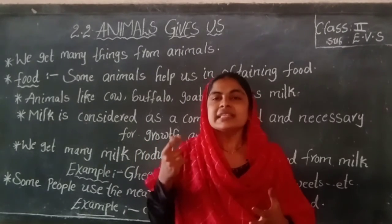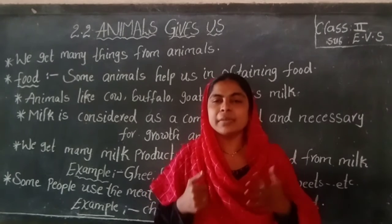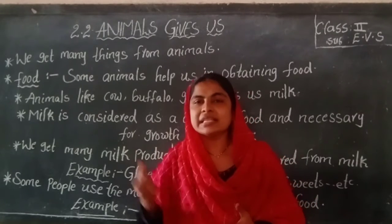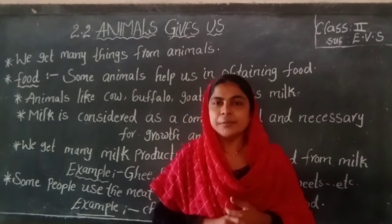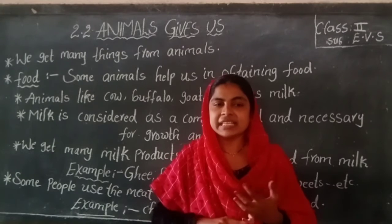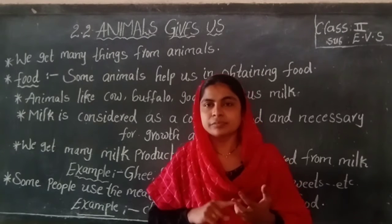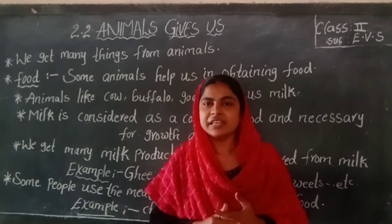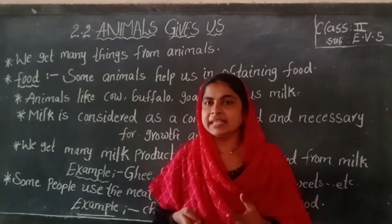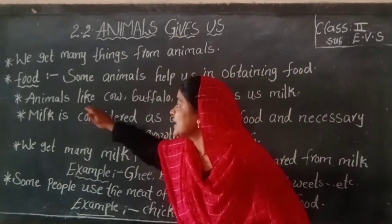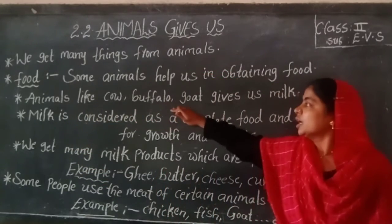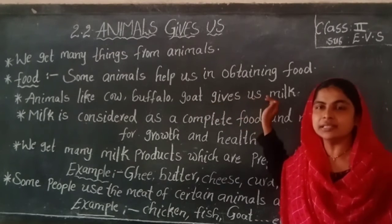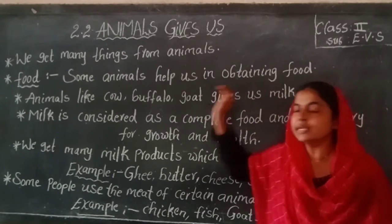Some people use the meat of certain animals as food. For example, chicken, mutton, fish, etc. Animals like cow, buffalo, and goat also give us milk.